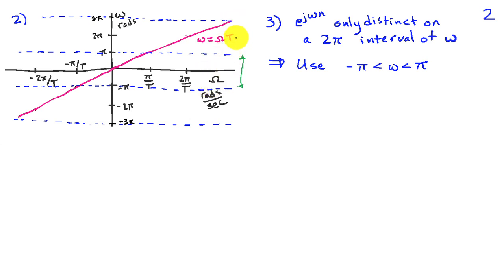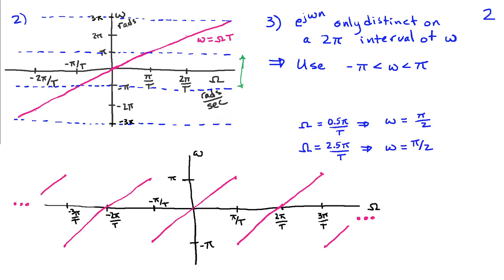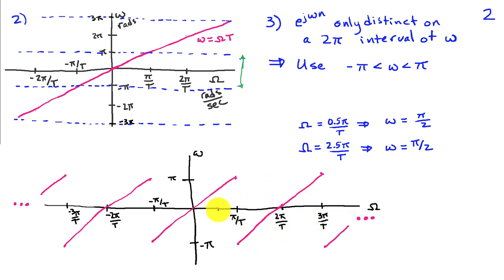The sinusoids would also be unique over the interval π to 3π or minus π to minus 3π. Frequencies on Ω associated with the interval between π/T and 3π/T — corresponding to discrete time frequency between π and 3π — wrap back around to the interval minus π to π by subtracting 2π. For example, a sinusoid at 0.5π/T maps to ω = π/2, and a continuous time sinusoid at 2.5π/T also ends up at exactly ω = π/2.